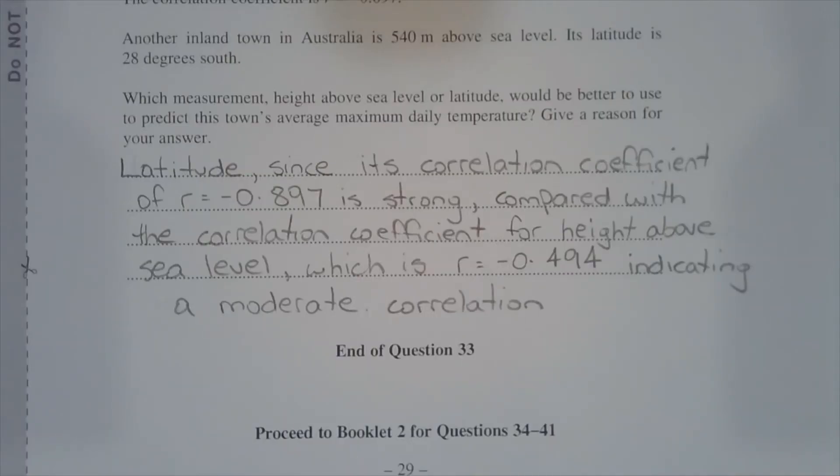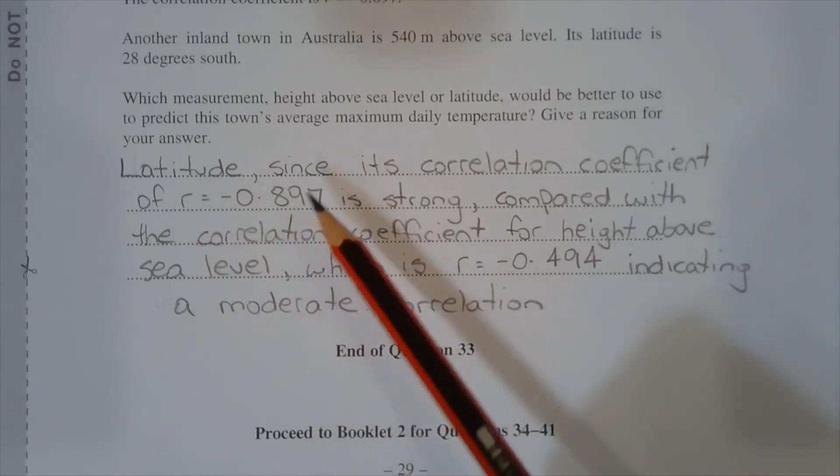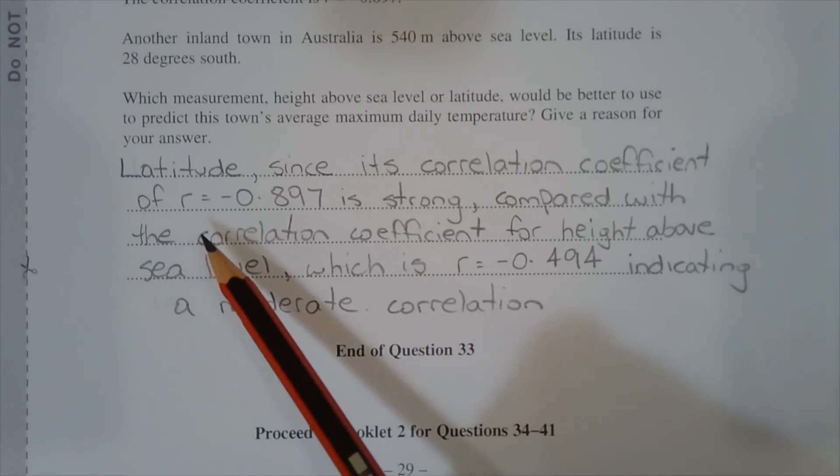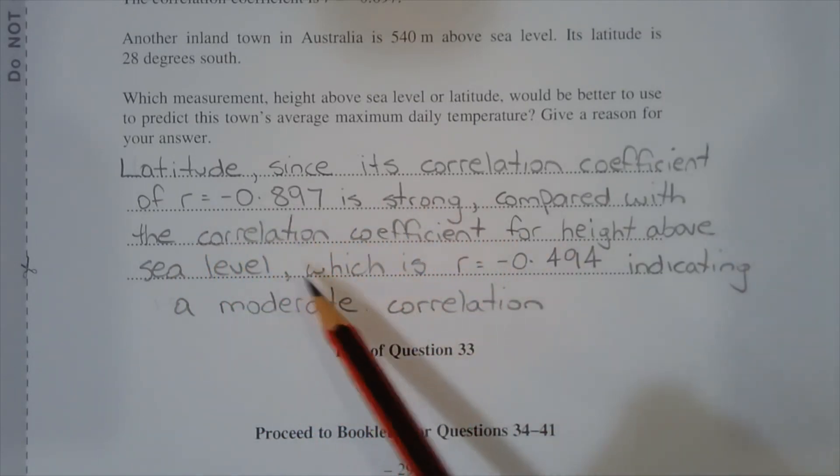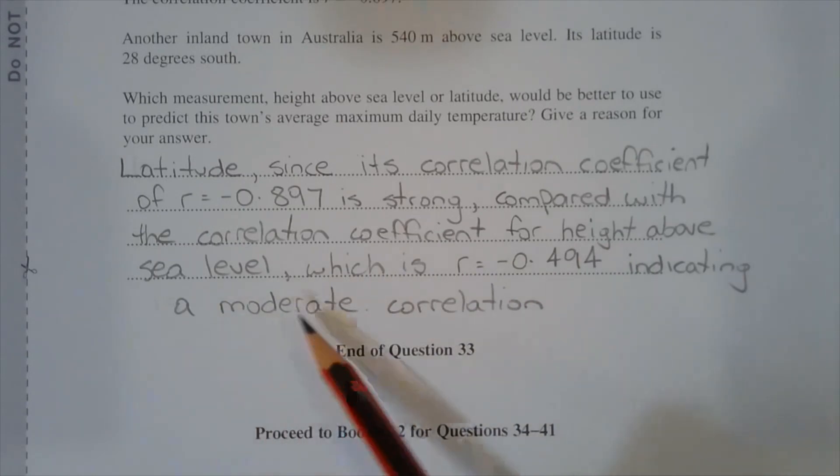Comparing the correlation coefficients for latitude and height above sea level, it would be better to use latitude, since its correlation coefficient of r equals negative 0.897 is strong, compared with the correlation coefficient for height above sea level, which is r equals negative 0.494, indicating a moderate correlation.